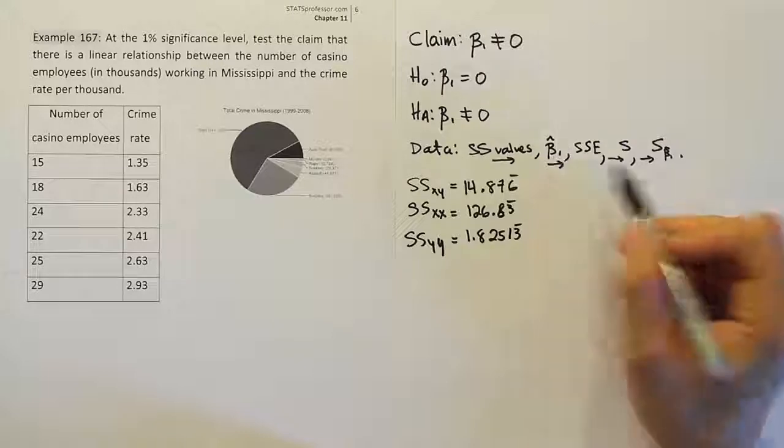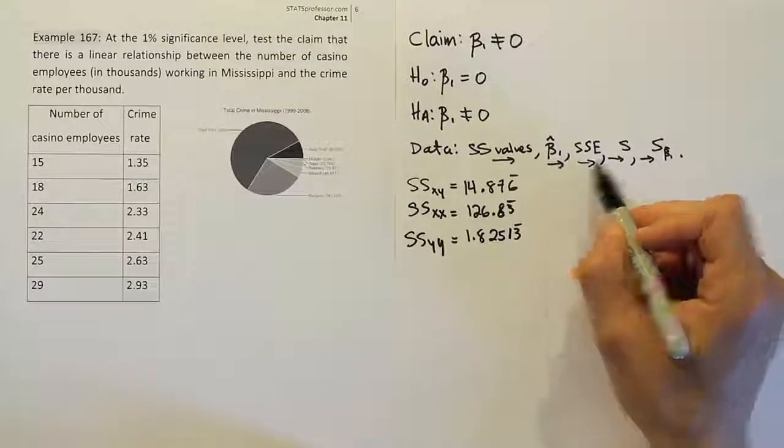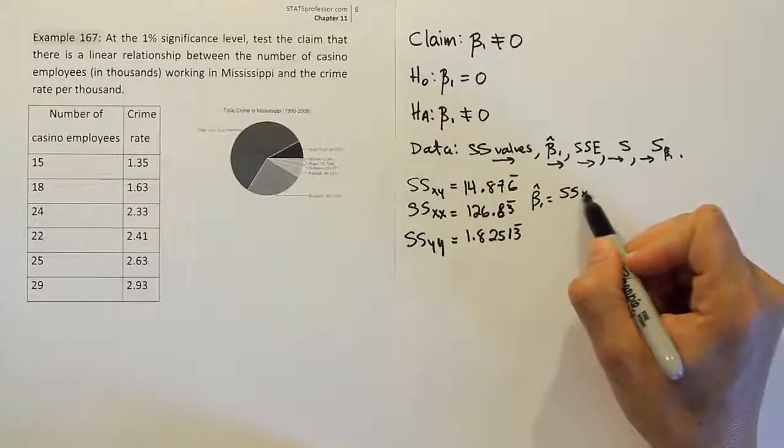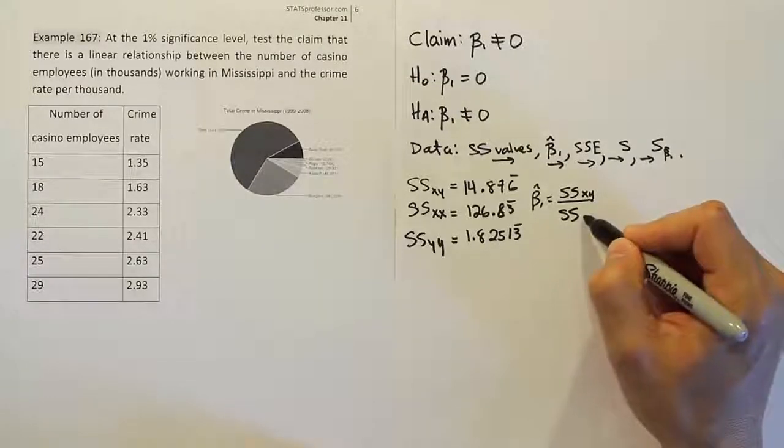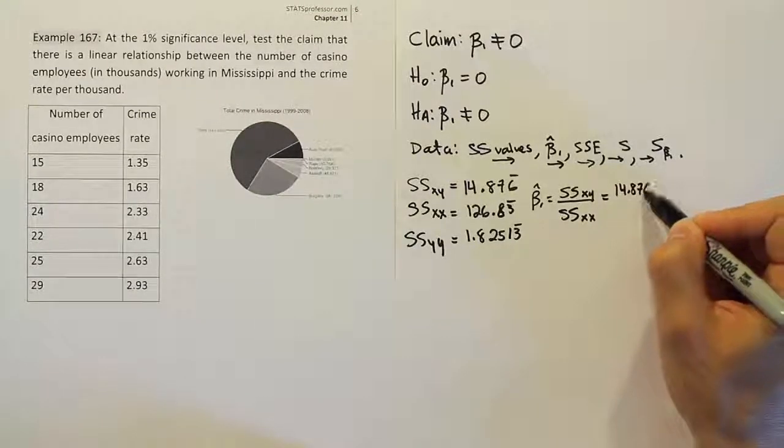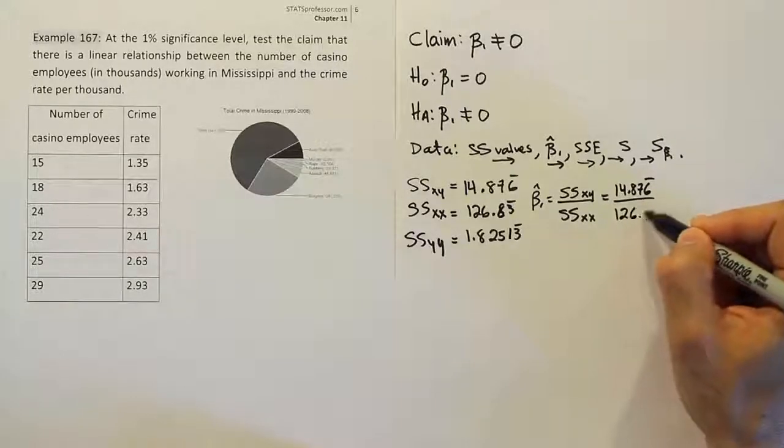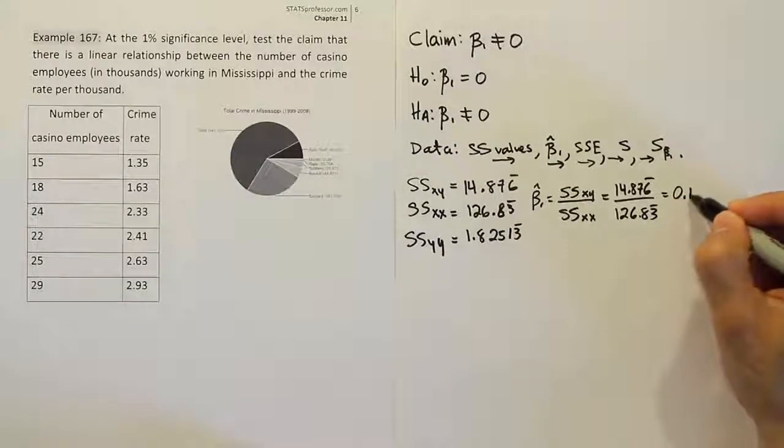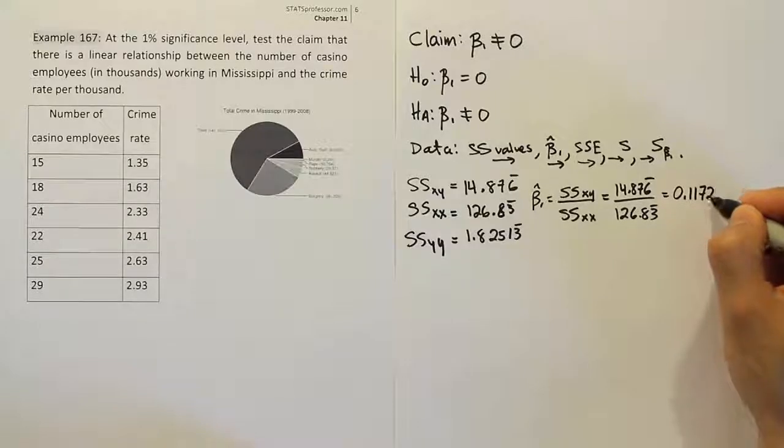From there, we're going to move on to this β₁ hat value. So β₁ hat, then SSE, then S, then S β₁ hat. So β₁ hat is going to be just the mixed term SSₓᵧ over SSₓₓ, the term with just the X values. So when you do that, you're going to have 14.876 repeating divided by 126.83 repeating. Let's see what that ends up giving us in the problem. I'm just going to work it out quickly here. And so when we're done, we get the answer 0.117293 dot dot dot. It keeps going.